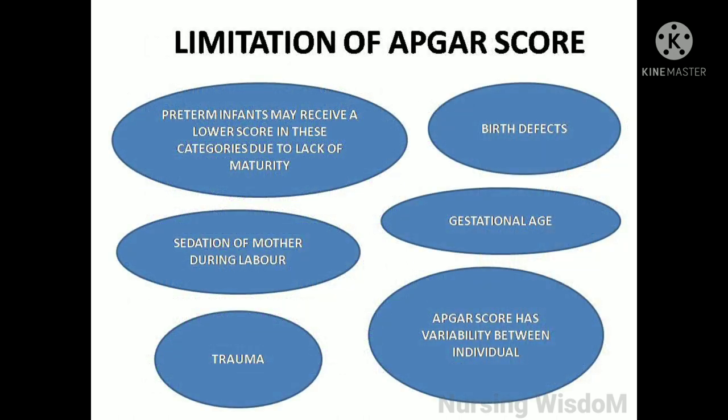Limitations of the APGAR score: there are numerous factors that contribute to variability in the score. Preterm infants may receive a lower score due to lack of maturity. Other factors include birth defects, sedation of the mother during labor, gestational age, or trauma. Inappropriately using the APGAR score has led to errors in diagnosing asphyxia, and various studies have shown variability between individual medical providers.